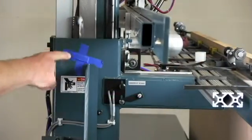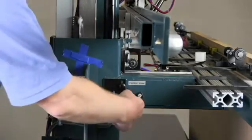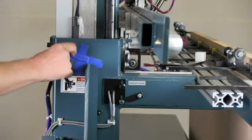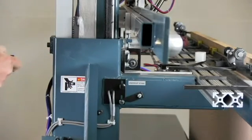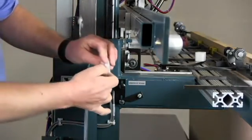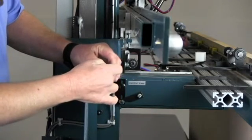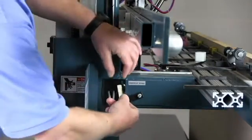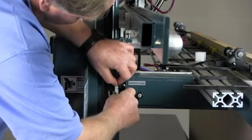When you receive your Magnum, the undercut reference scale is taped to the side of the machine and the indicator is not adjusted. We'll remove the undercut reference scale. The scale has a peel-and-stick backing. We'll peel the tape off the back and position it on the undercut reference assembly.